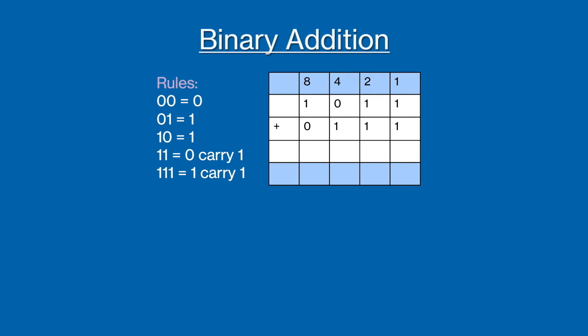So here we are adding the binary values 1011 and 0111. In the first column, the ones column, we can see that we have two ones. From our rules, we can see that we need to place a zero and then carry a one over to the next column. Now in the next column, including the one we have just carried, we have three ones. Our rules show us that we are going to place a one and then carry a one. In the third column, we again have two ones, so we're going to place a zero and carry a one. And in the last column, we have two ones including the one we have just carried, so we're going to place a zero and carry a one. Finally, we have a one left over, so we're just going to put that in the answer. So our final answer is 10010.